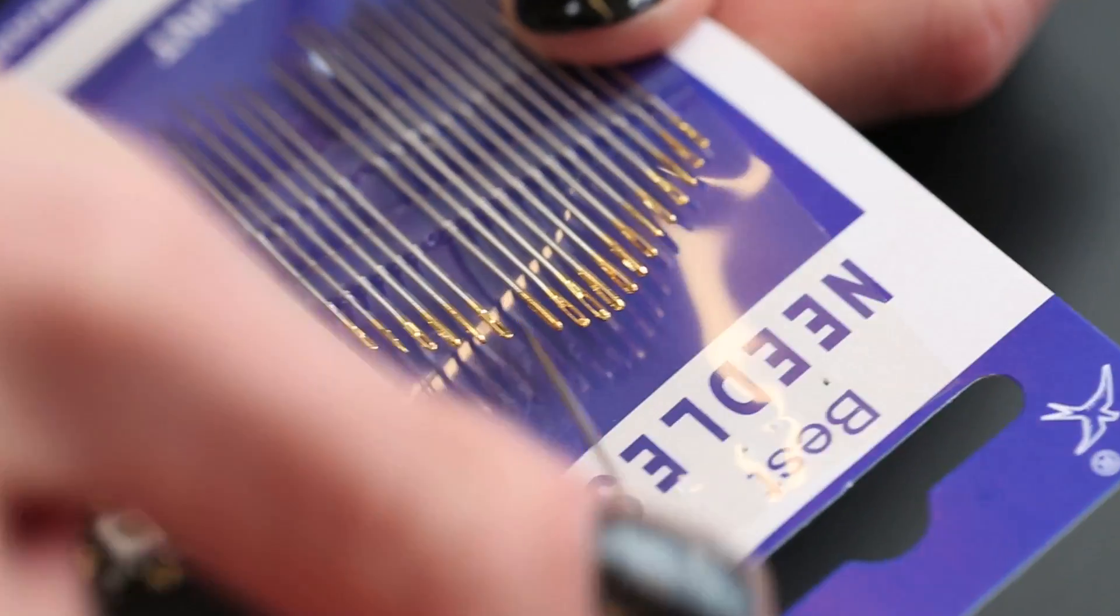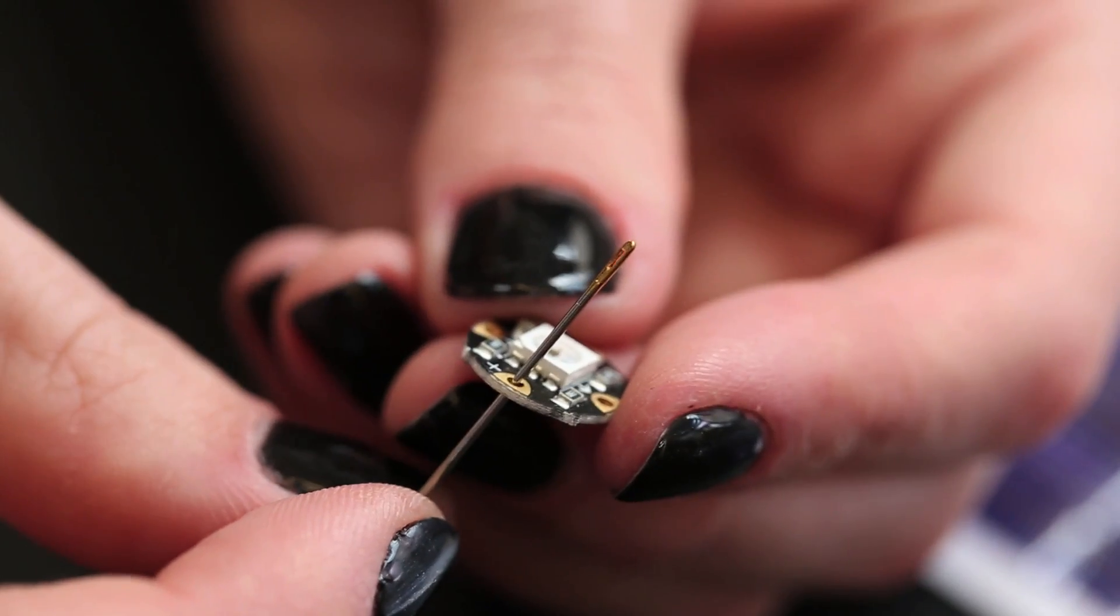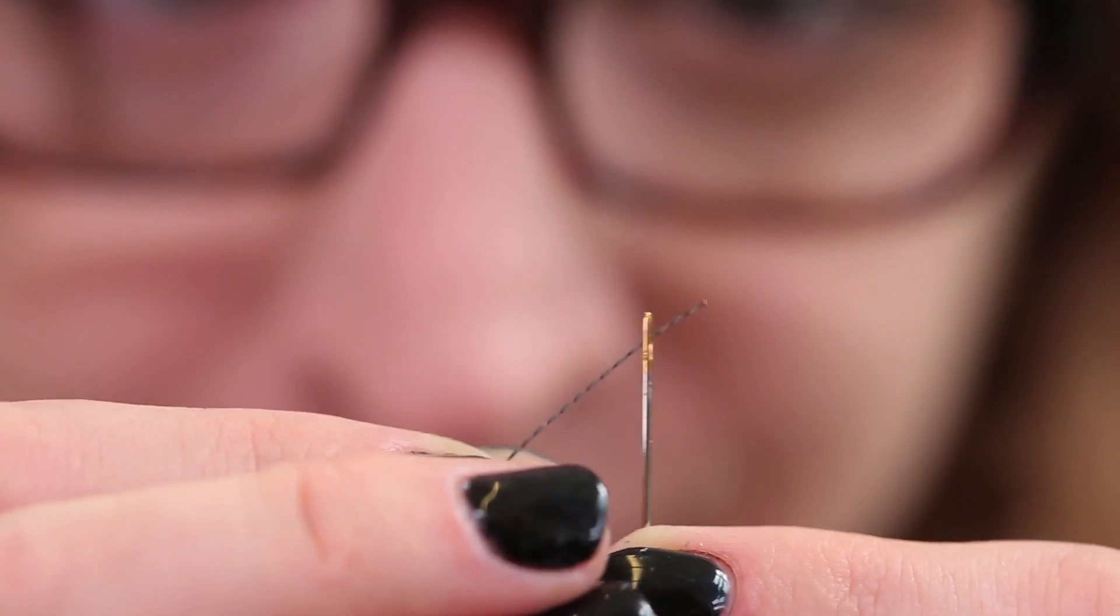If your project has more than 20 pixels in it, you should upgrade to silicone-coated stranded wire. Choose a needle that fits through the hole, but whose eye is still large enough for the conductive thread.